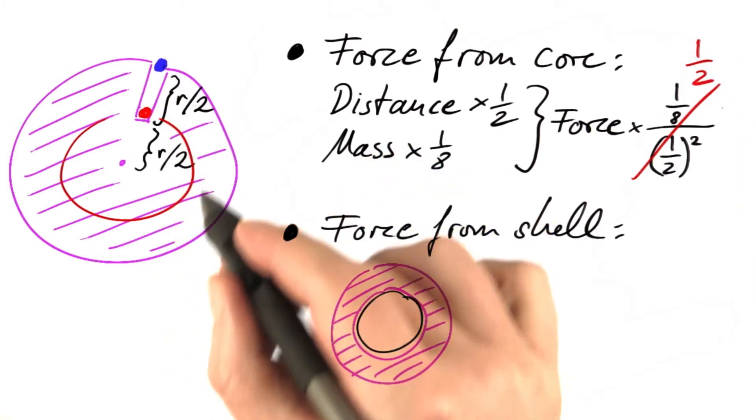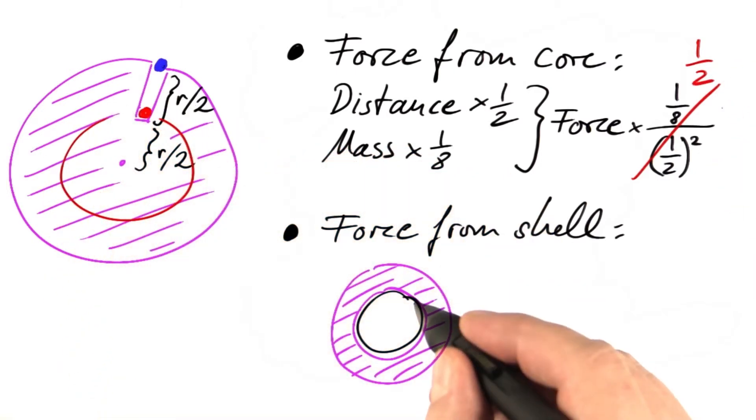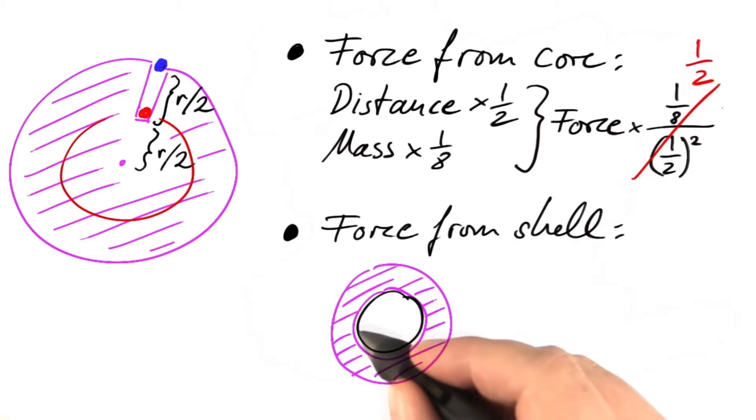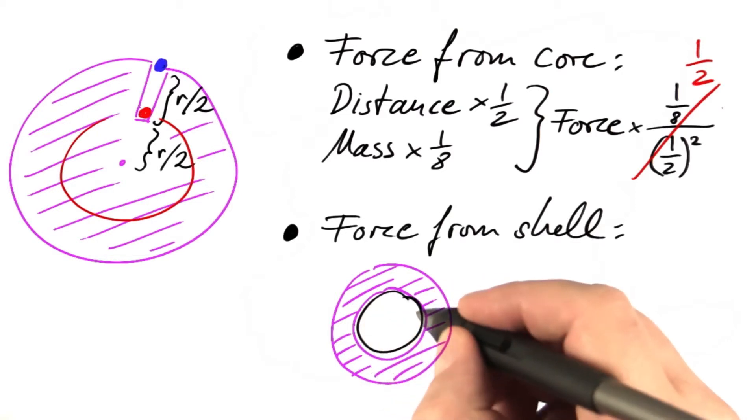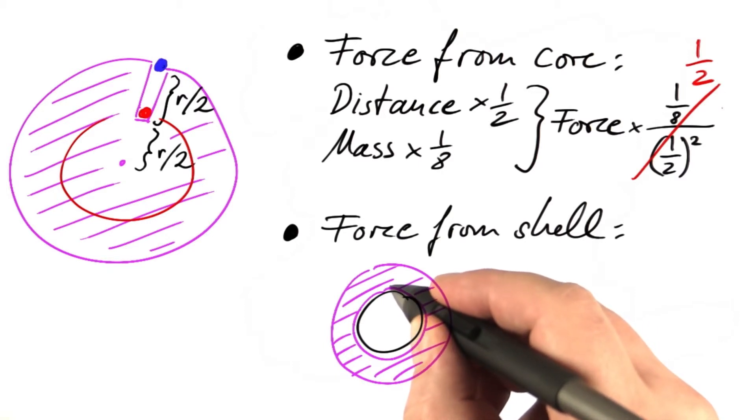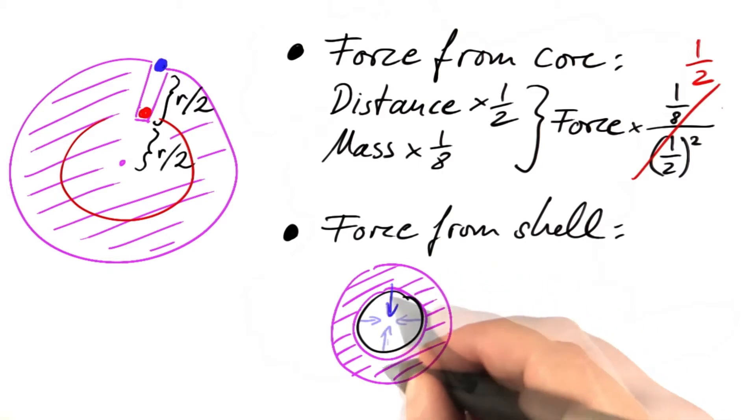And to see what's happening with the force from the shell, let's put an imaginary sphere close to the inside of that shell. If there is a gravitational force on the surface of that sphere, it has to be rotationally symmetric, for instance like that.